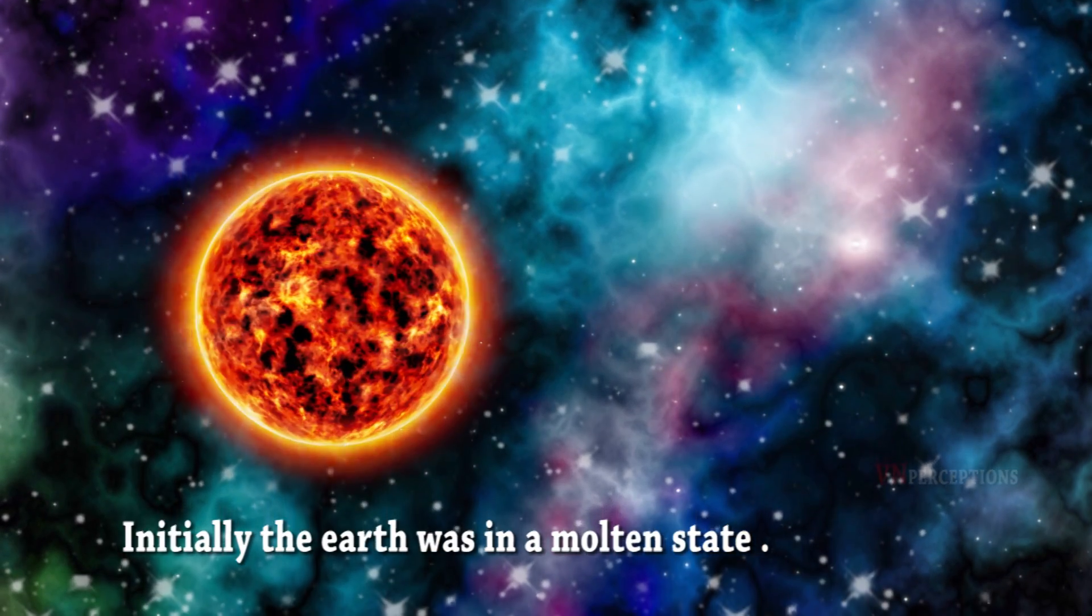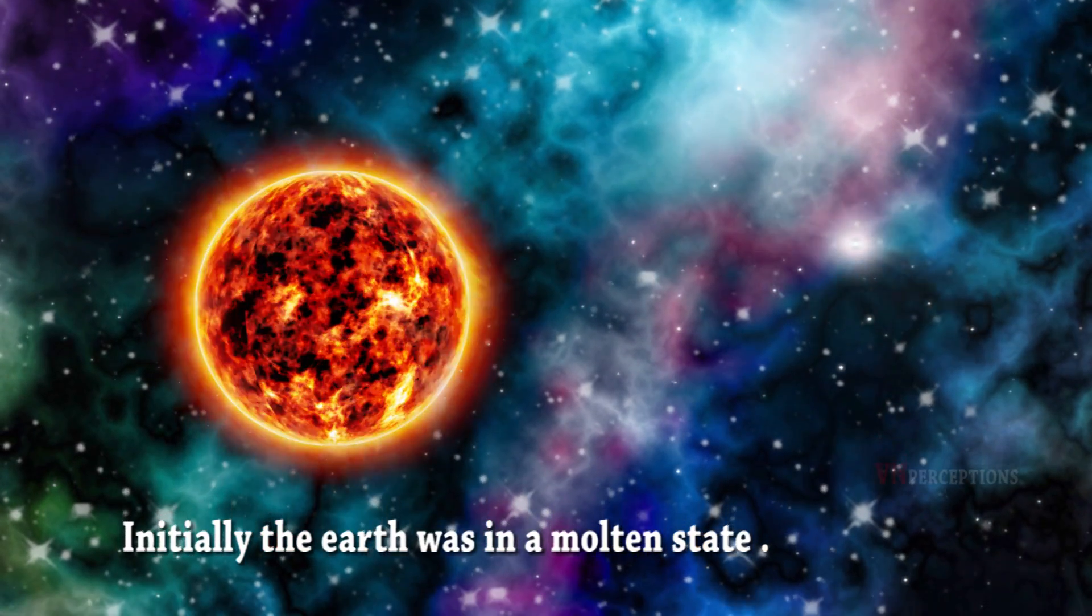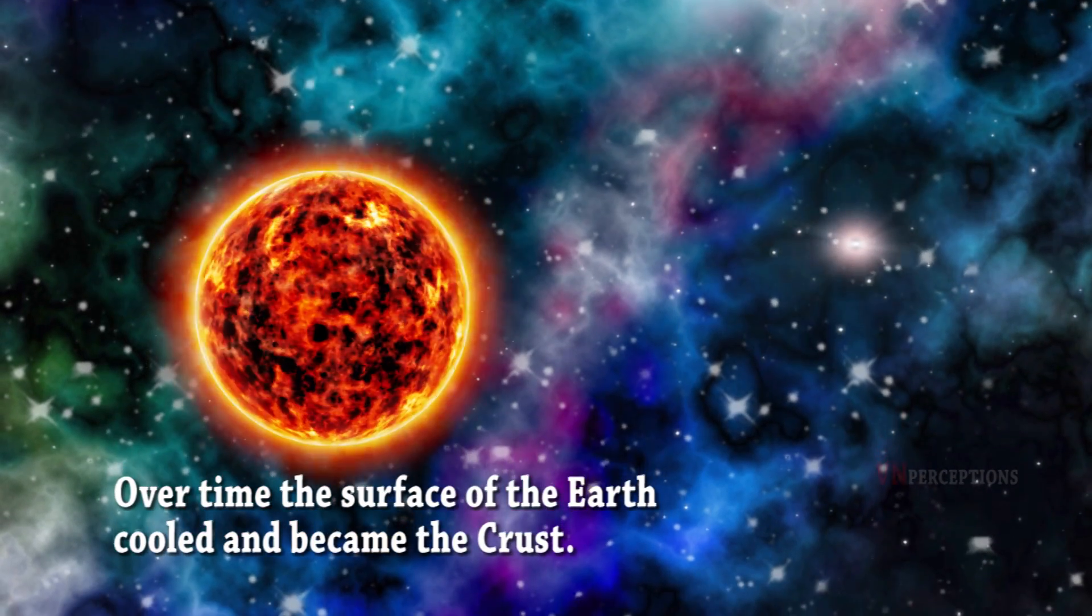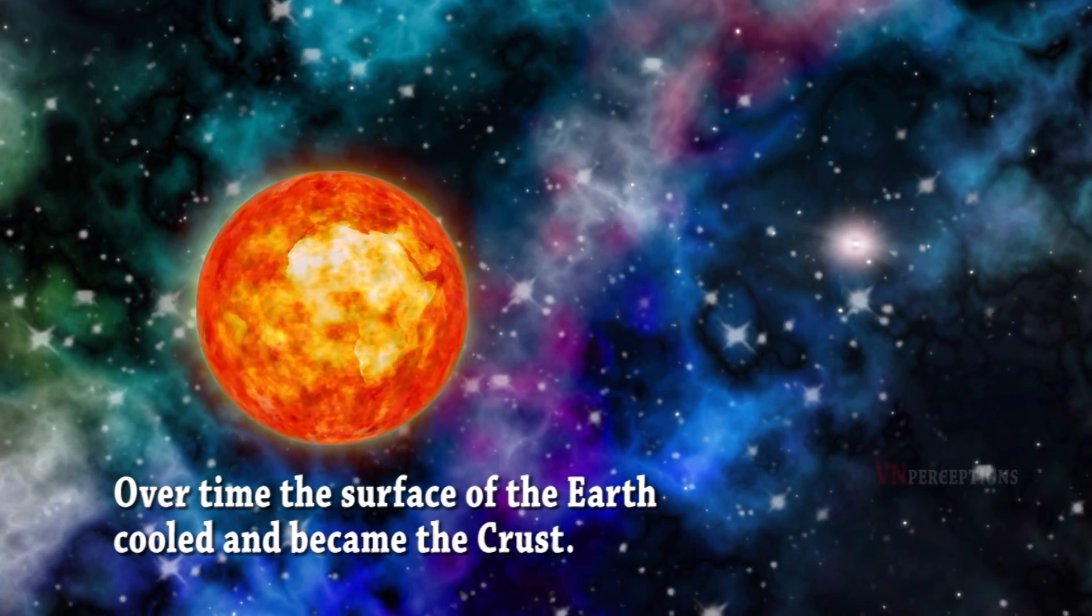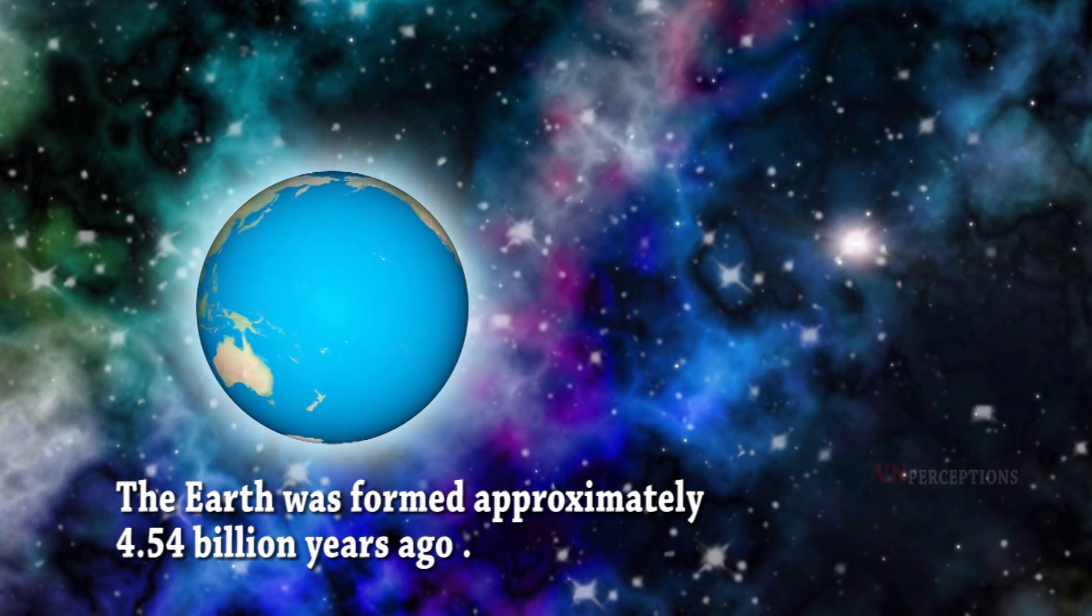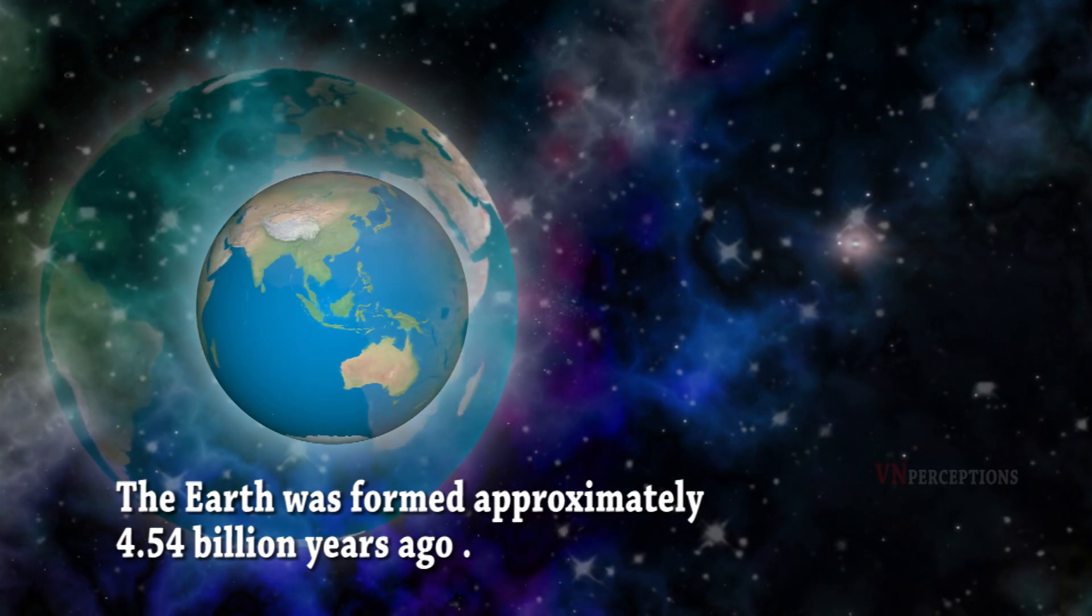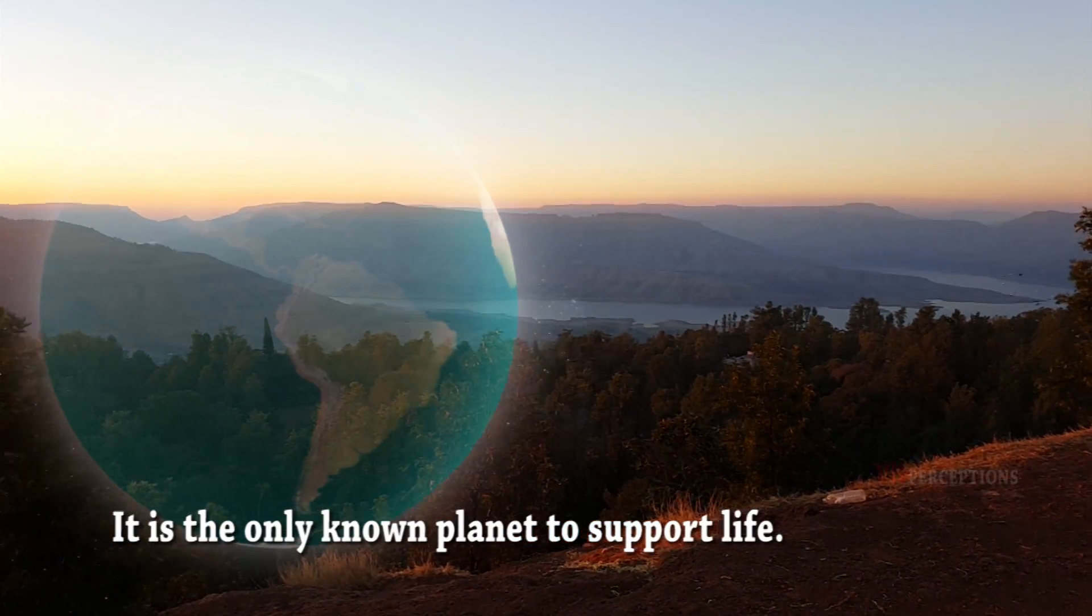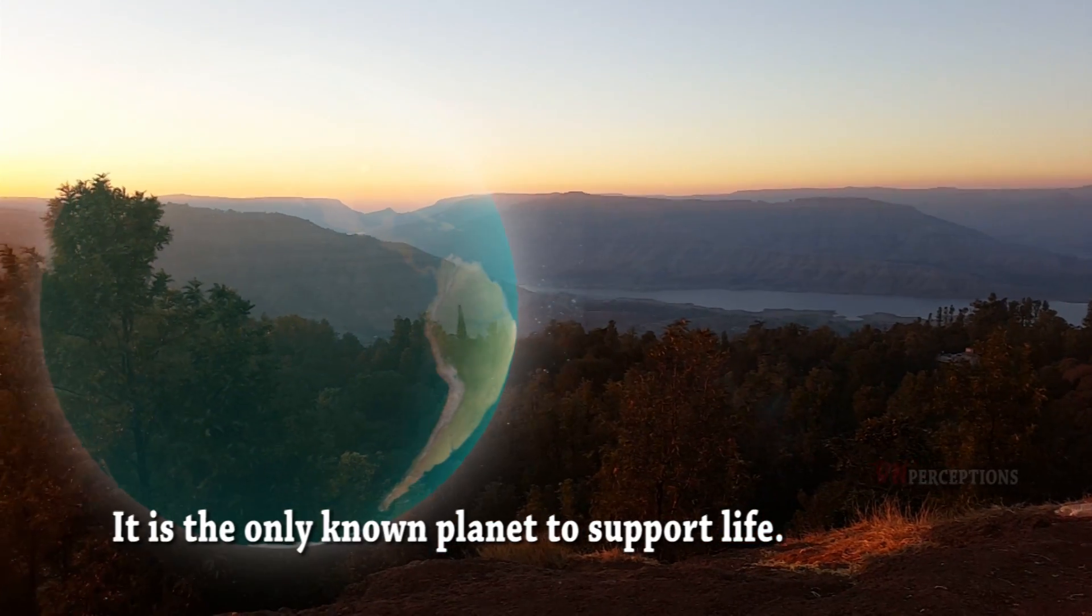Initially, the Earth was in a molten state. Over time, the surface of the Earth cooled and became the crust. The Earth was formed approximately 4.54 billion years ago and is the only known planet to support life.